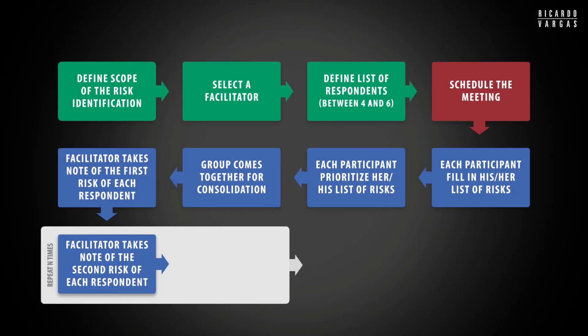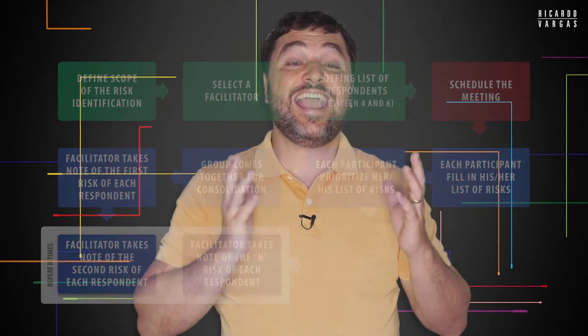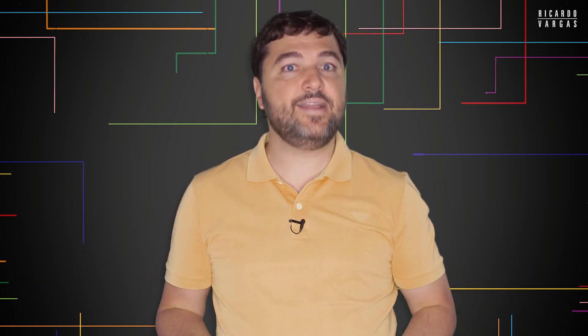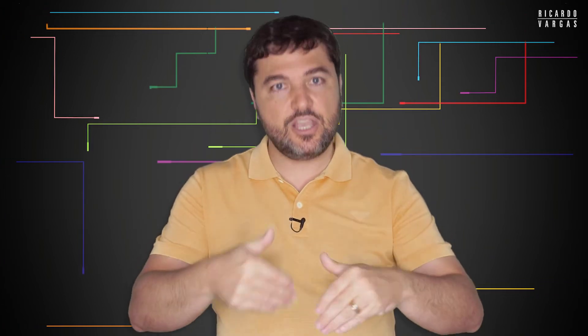And then when you reach, go back to the first person and ask, now your second risk. Now your third, now your fourth, now your fifth. If someone says the same risk, this person goes to the next one on his or her list. So let's suppose that my risk is rain. But someone before me said rain. So I don't need to say rain because I'm repeating. I say the other one.